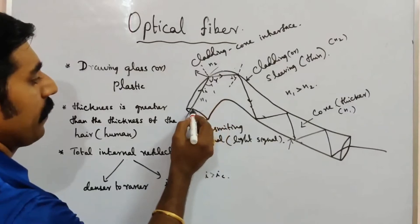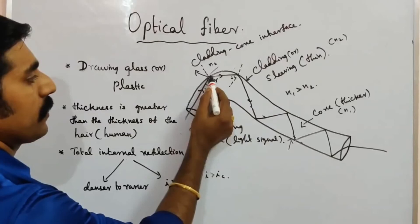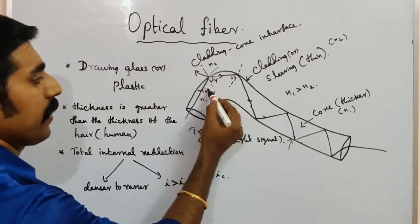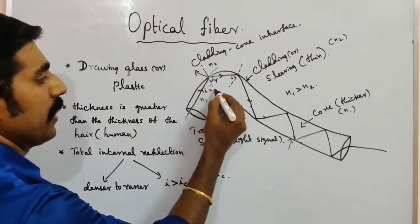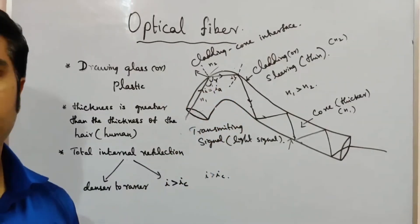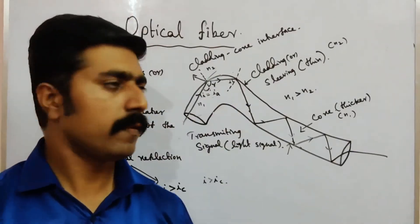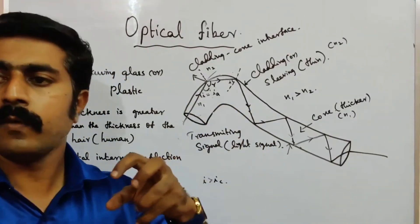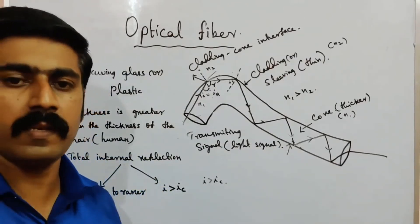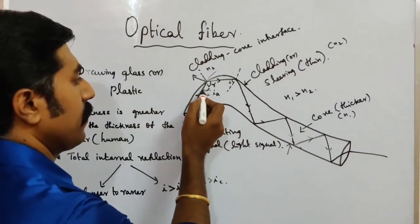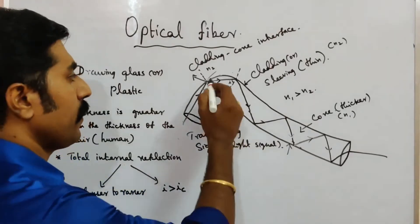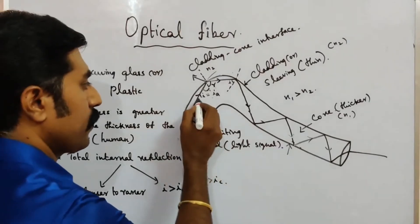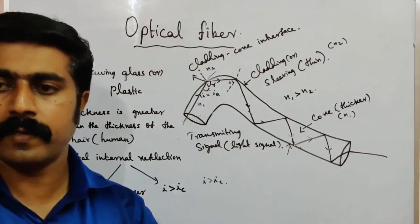The light travels from denser to rarer. The surface separating the core and cladding is important. Let us draw a normal line — this angle of incidence is also called the acceptance angle, denoted by the letter I with subscript E. The incident ray fully reflects, and since there is no loss of energy, the intensity of the incident light is equal to the intensity of the reflected light.